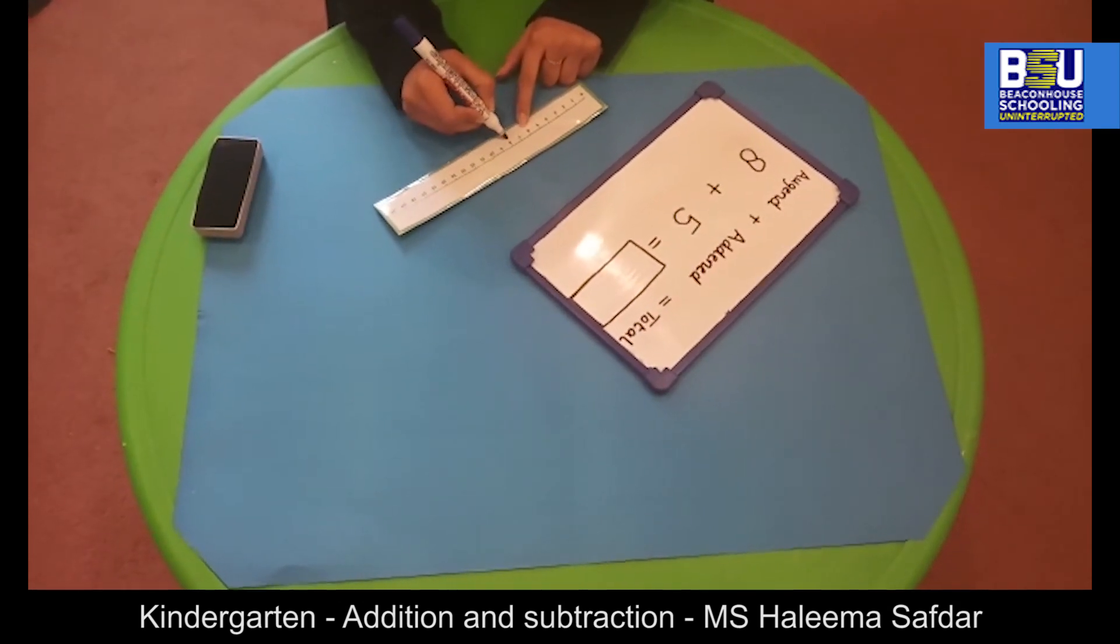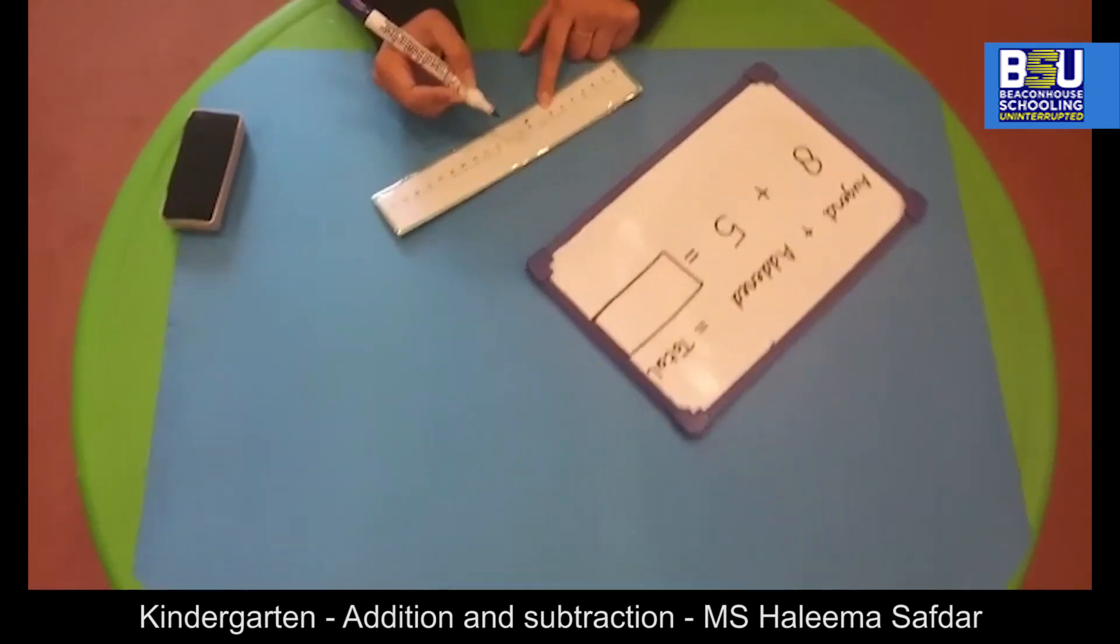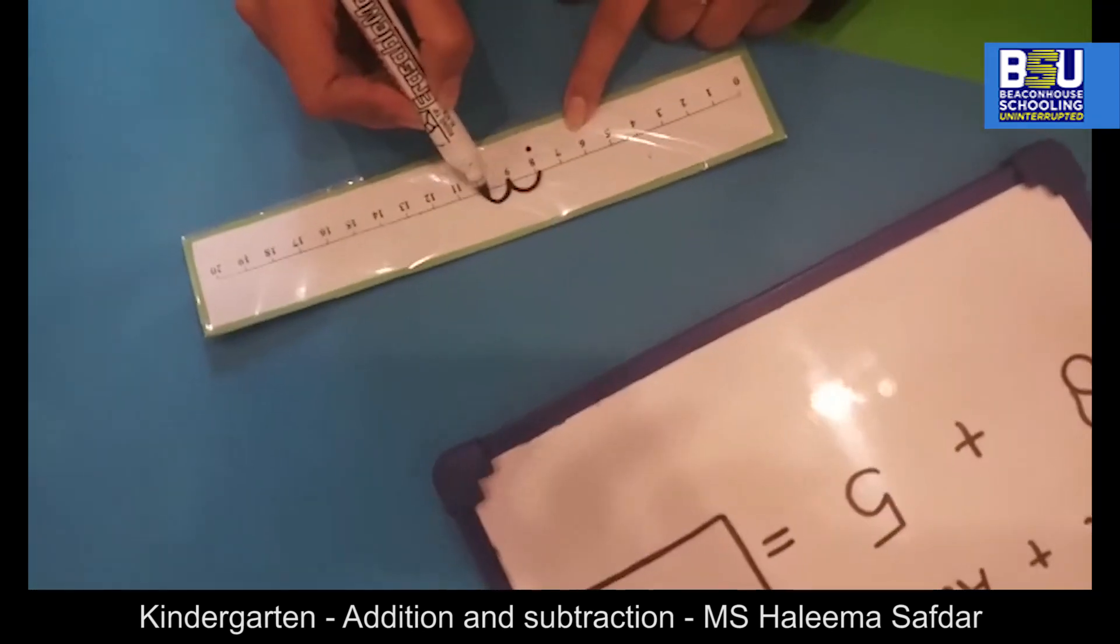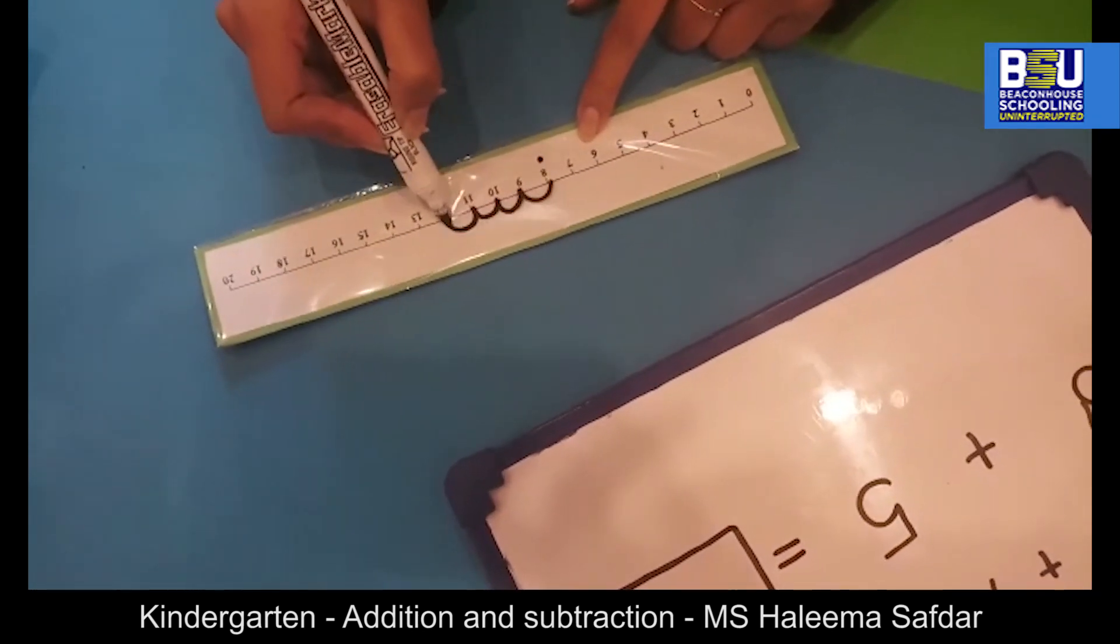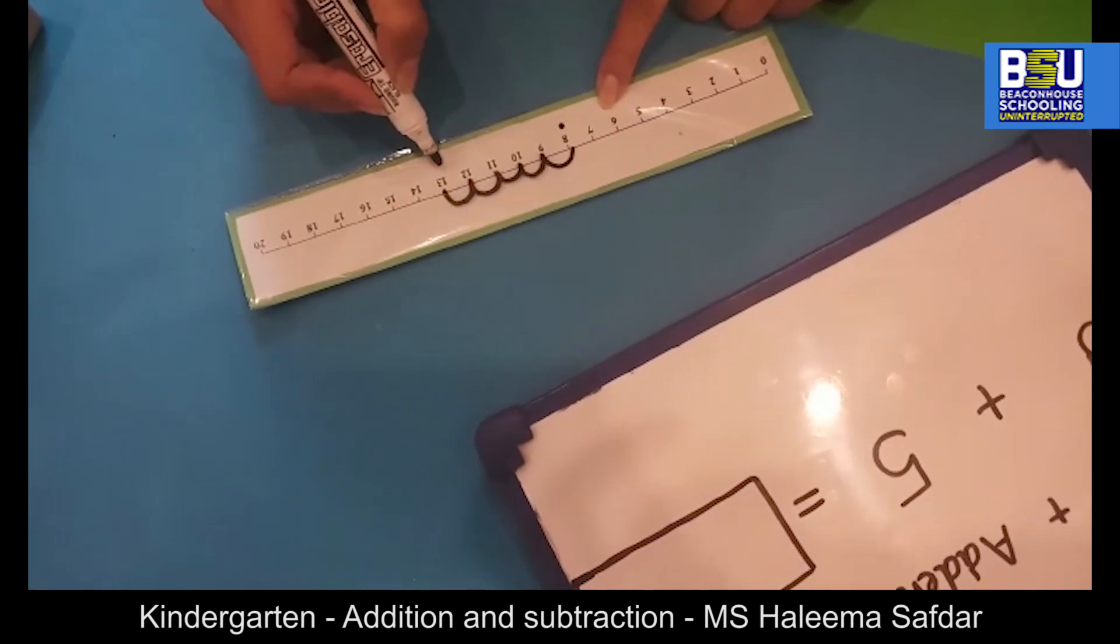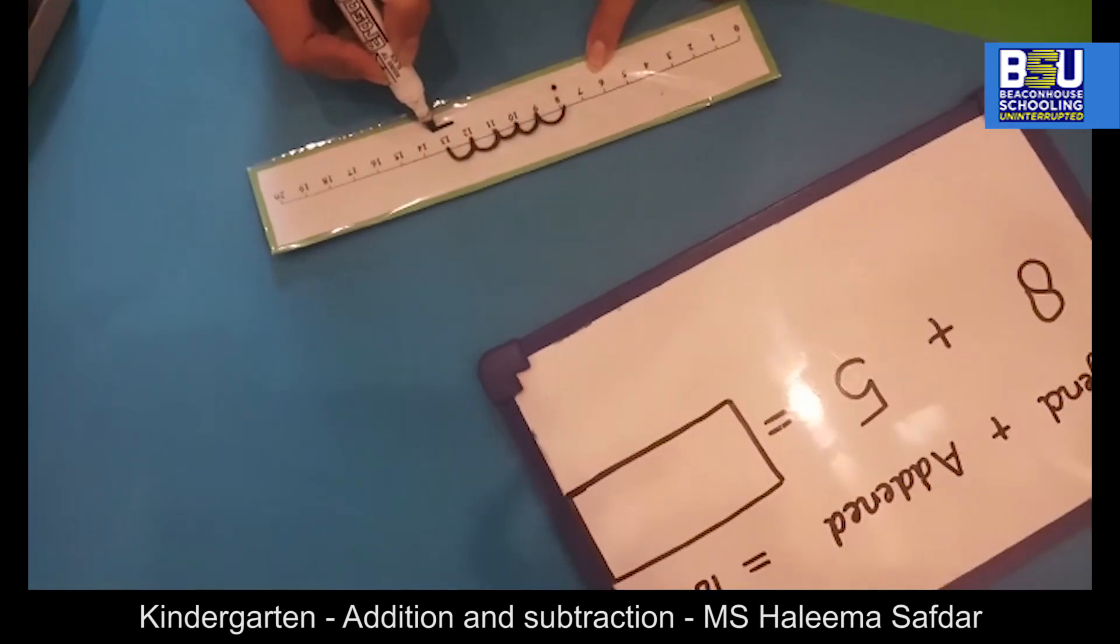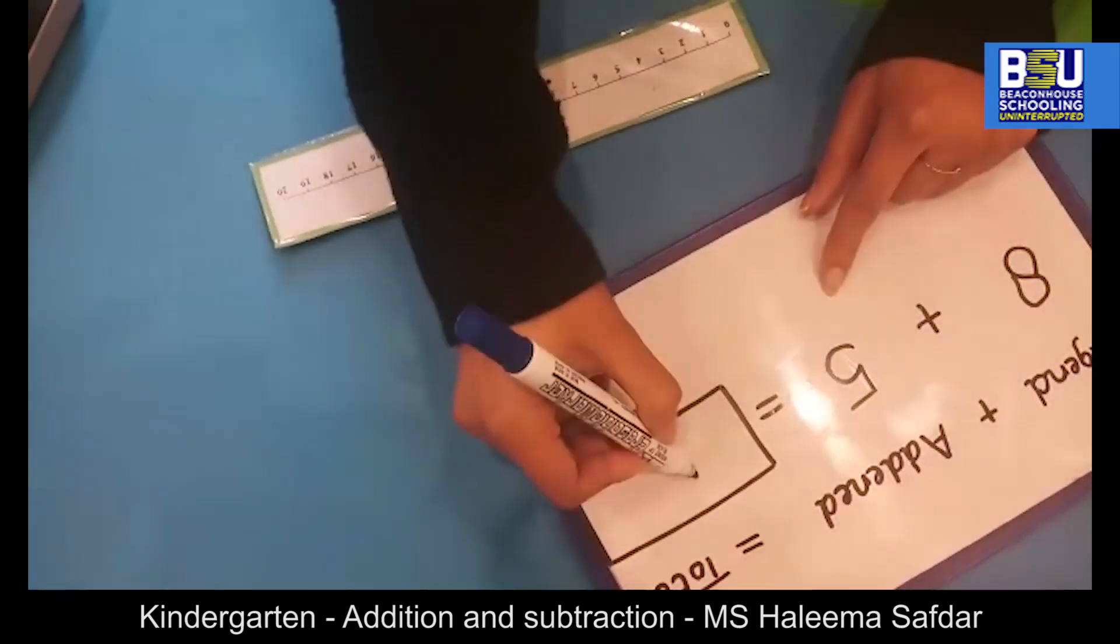So we will begin with number 8 and we will take 5 jumps forward: 1, 2, 3, 4, 5, and the number on which we land is the total of both numbers.